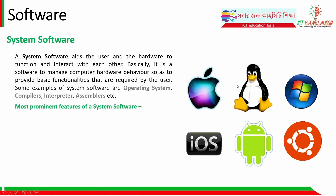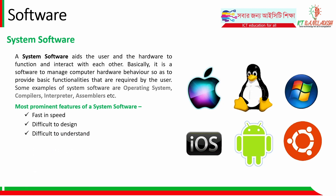The most prominent feature of system software is its fast speed. System software is written in code, and each operating system has specific functionality. It is generally difficult to understand and less interactive.